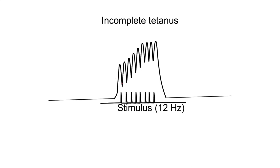When we repeatedly stimulate an amphibian nerve-muscle preparation such that each successive stimulus falls in the relaxation phase of the simple muscle twitch, we get something known as incomplete tetanus. In this figure, the downward pointed markings are recordings of the stimulus. Multiple stimuli are being given and the frequency is 12 hertz — that is, 12 stimuli are given per second.